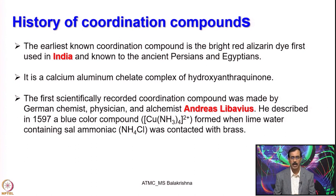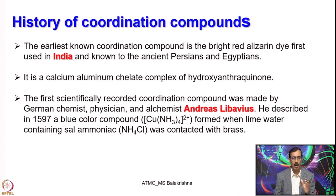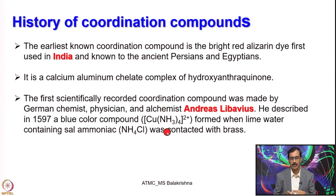Now it is known as tetra ammonium copper, formed when lime water containing sal ammoniac — those days ammonium chloride was mentioned as sal ammoniac — was contacted with brass. They observed the formation of this blue colour, essentially due to the formation of this compound here. This is the first recorded copper complex or coordination complex.